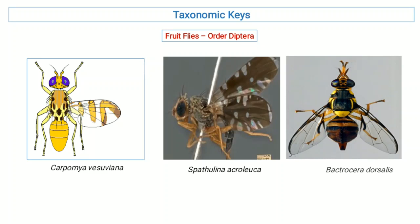In this video, we are going to talk about taxonomic keys, in which we will use the taxonomic characteristics of fruit flies that belong to order Diptera. Taxonomic keys are basically a scientific and logical arrangement of the taxonomic characteristics of any group of organisms that is helpful in identification.